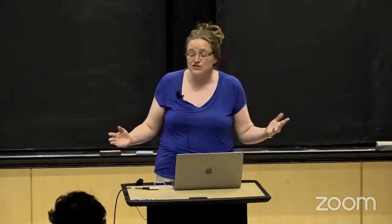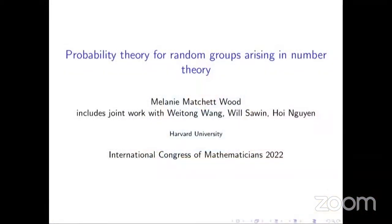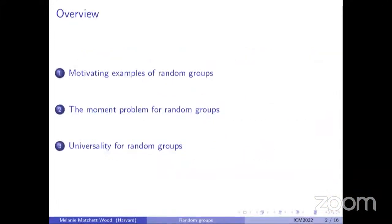Thank you, and thanks to the organizers for the opportunity to speak. Some of what I'll talk about today includes joint work with Wei Ho, Wang, Will Sawin, and Hoi Nguyen. My plan is to first talk about some motivating examples of random groups — distributions on groups I'm interested in. Then I'll talk about two topics in the probability theory of these random groups: the moment problem for random groups, and universality for random groups.